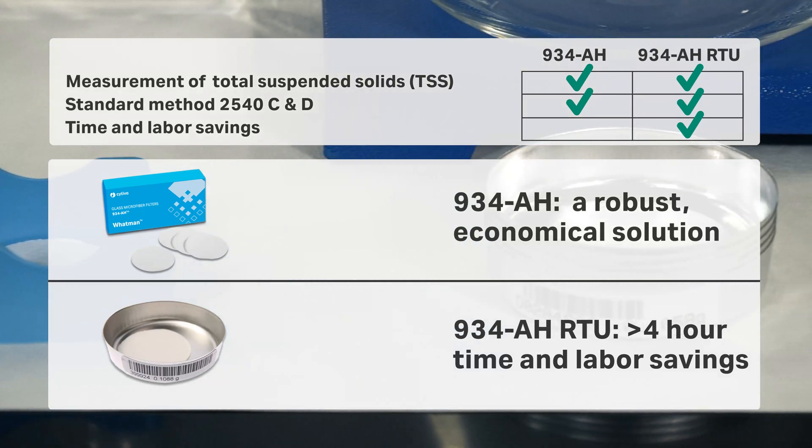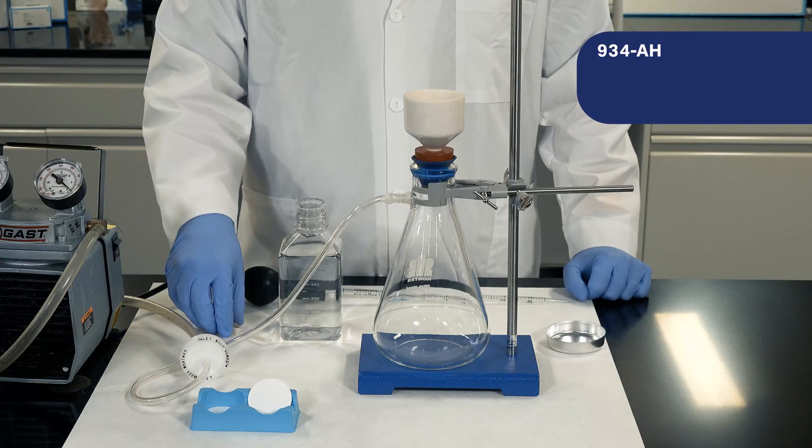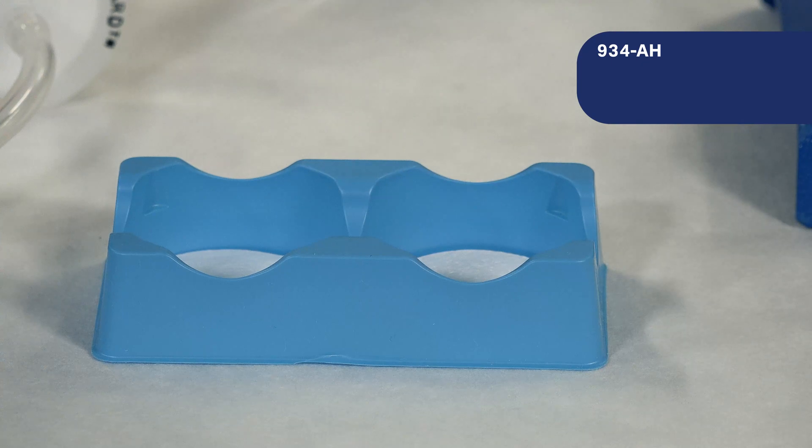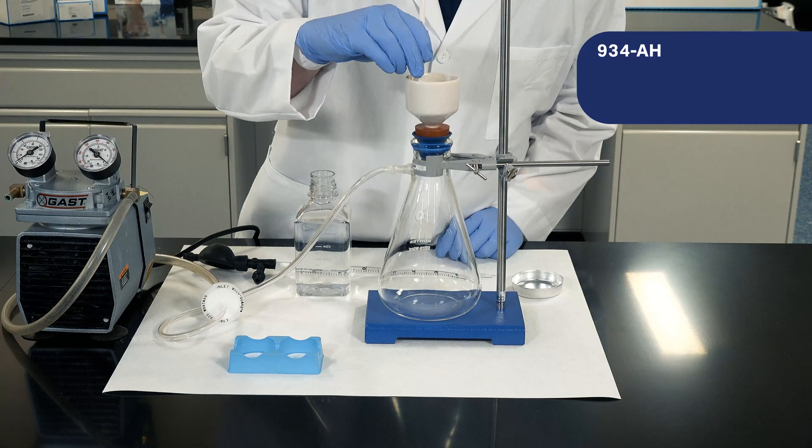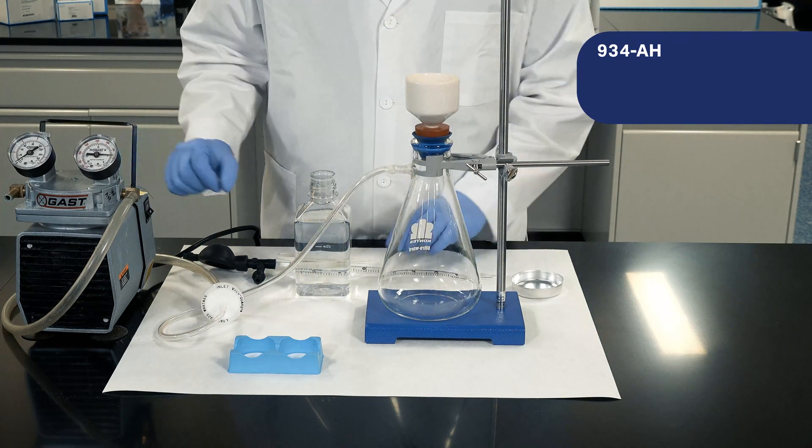Let's look at the workflow for these two products. Retrieve the standard 934AH and ensure it is properly seated in the Buchner funnel. Apply vacuum and wash with water.